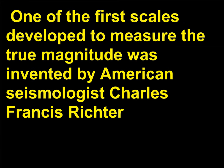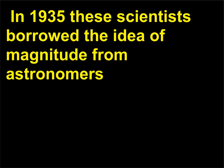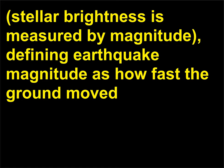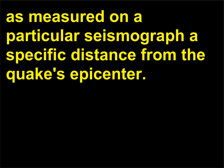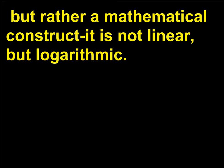One of the first scales developed to measure the true magnitude was invented by American seismologist Charles Francis Richter, 1900–1985, and German-born seismologist Beno Gutenberg, 1889–1960. In 1935 these scientists borrowed the idea of magnitude from astronomers — stellar brightness is measured by magnitude — defining earthquake magnitude as how fast the ground moved, as measured on a particular seismograph a specific distance from the quake's epicenter. The Richter scale is not a physical scale like a ruler, but rather a mathematical construct; it is not linear, but logarithmic.